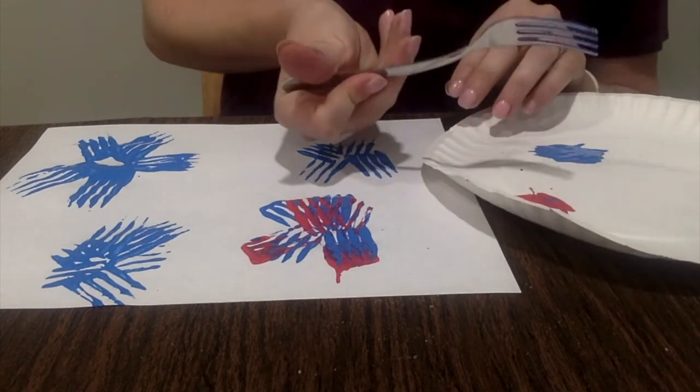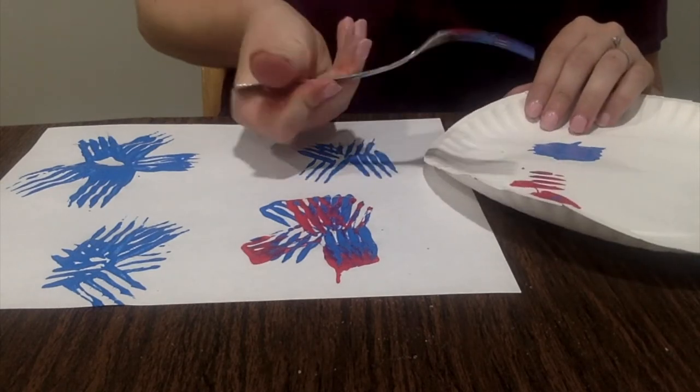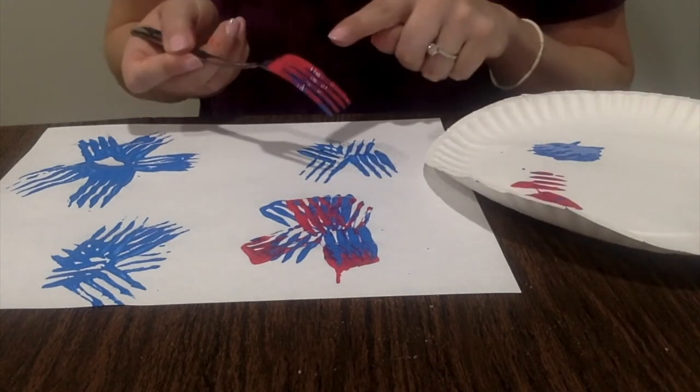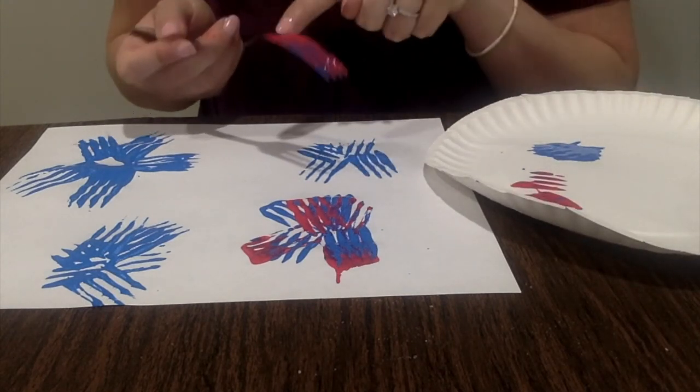If you don't have paint, you could also use a stamp pad. If you have ink at home, you could also use that and it works the same way. You just might have to push a little harder to get some of the ink on the fork.